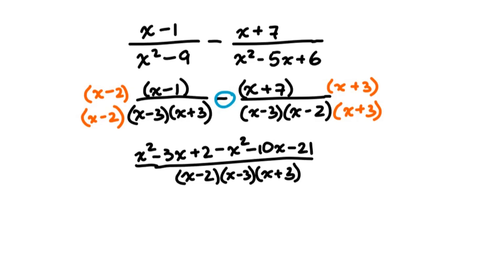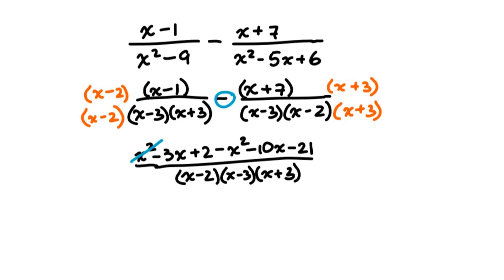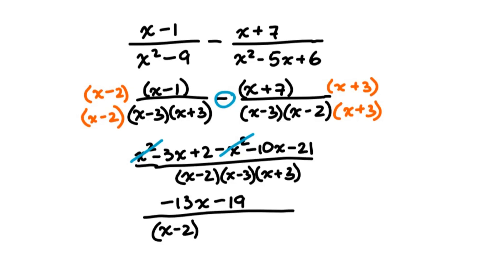Now we need to collect like terms and simplify. I notice there is an x squared and a negative x squared — they are exact opposites, so they cancel. Then negative 3x and negative 10x are like terms, giving negative 13x. And 2 plus negative 21 gives negative 19. So the numerator is negative 13x minus 19, over the product of the three factors in the denominator.